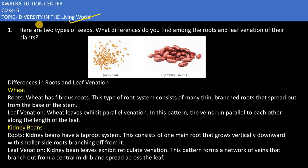Let's start with a new topic which is diversity in the living world. Here we have two types of seeds given. What differences do you find among the roots and the leaf venation of their plants? We have to differentiate on roots and leaf venation.